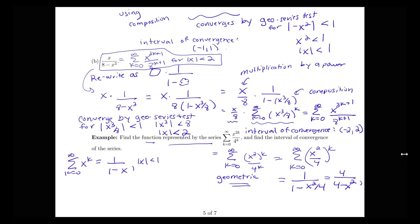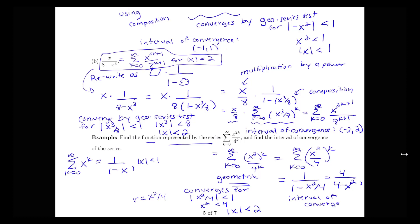The interval of convergence comes from the geometric series converging for the absolute value of x squared over 4 less than 1, since the ratio r is x squared over 4. That means x squared less than 4, or the absolute value of x less than 2. So the interval of convergence is from negative 2 to 2. We can perform these manipulations in both directions — given a function to find its series, or given a series to identify its function.